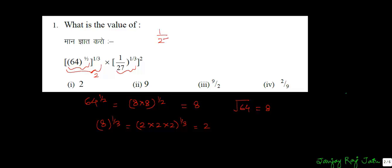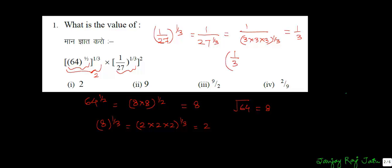Now, 1/27 is raised to the power 1/3. 1 raised to any power is 1. 27 raised to power 1/3 is 3 into 3 into 3 raised to power 1/3, which gives us 1/3. This result is further raised to the 2nd power, which makes it 1/9, because 1 squared is 1 and 3 squared is 9. So this expression gives result 1/9. We need to multiply these since there is a multiplication sign between them, so the result is 2/9.